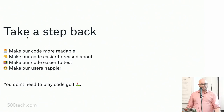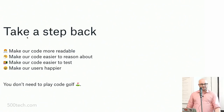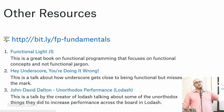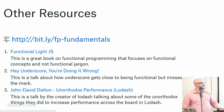Some other resources: the slides are at bit.ly slash fp hyphen fundamentals. The first book is 'Functional-Lite JS' — basically what I based this talk on, a much more in-depth version of writing functional JavaScript without scary jargon. 'Hey underscore, you're doing it wrong' is an about five-year-old talk, one of the early signs of FP becoming popular in the JavaScript community. And 'Unorthodox Performance' by John David Dalton covers all the crazy stuff Lodash does under the hood to make its imperative functions super fast so you can write declarative code.